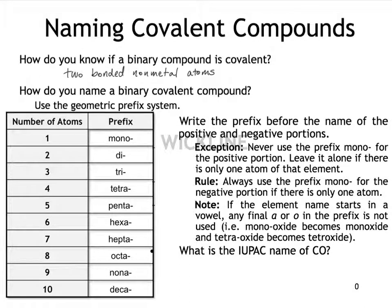The rule: always use the prefix mono for the negative portion, but not for the positive. And a note — if the element name starts with a vowel, then any final A's or O's in the prefix would be dropped. For example, if you had one oxygen atom in the negative portion, you would say monoxide rather than monooxide — the final O in mono is dropped when the two names are put together.